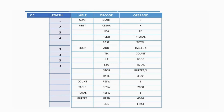For 'STCH BUFFER,X', one operand is a register and the other is a label, so it is Format 3 — length 3. Next, 'EOF BYTE X'F0'', which generates a hexadecimal constant. Counting the digits: there are two digits (F and 0), so divide by 2 — length is 1 byte.